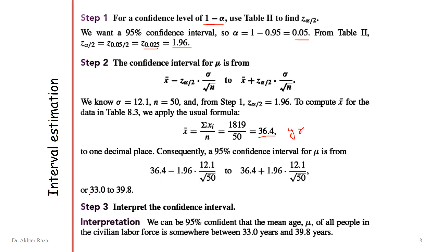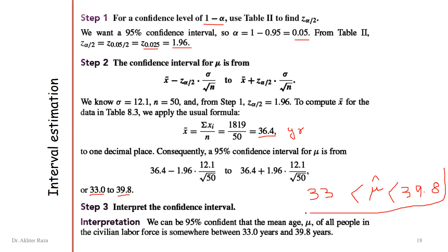The left value of the interval is 33.0 and the upper limit is 39.8. This is the interval estimate of the mean age, written as 33 ≤ μ ≤ 39.8. We conclude with 95% confidence that the mean age of all people in the civilian labor force is somewhere between 33 and 39.8 years. That is the end of this complete example in interval estimation.